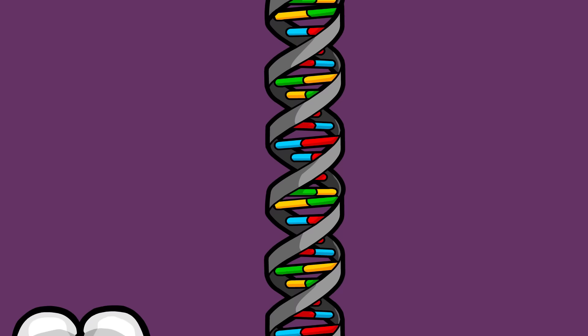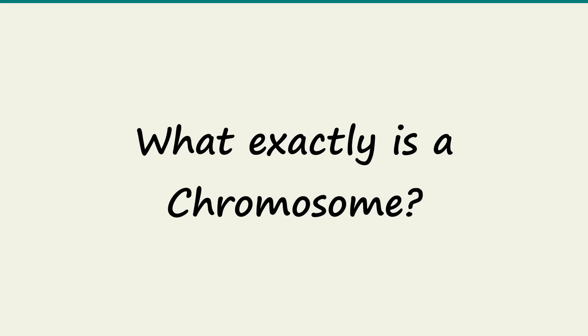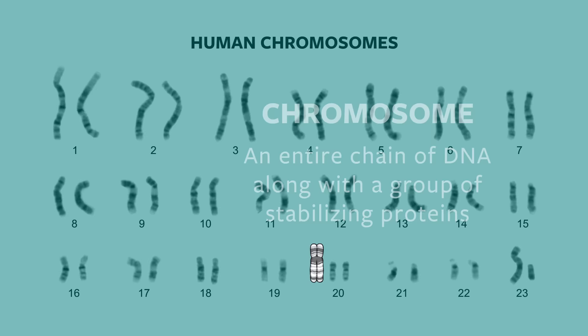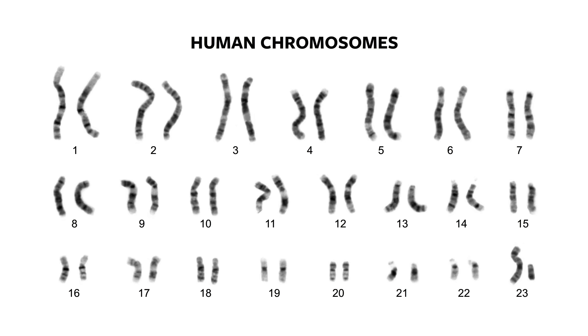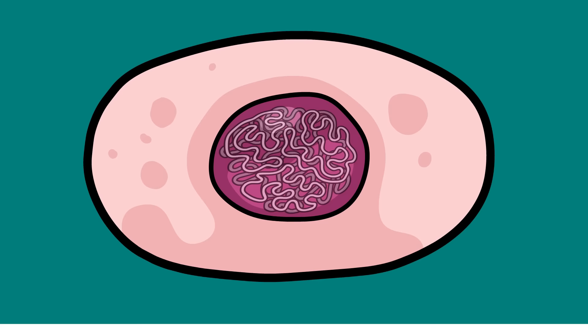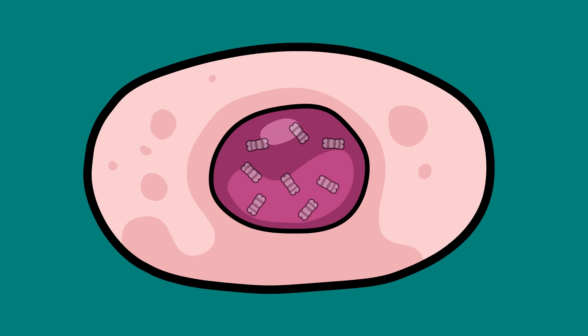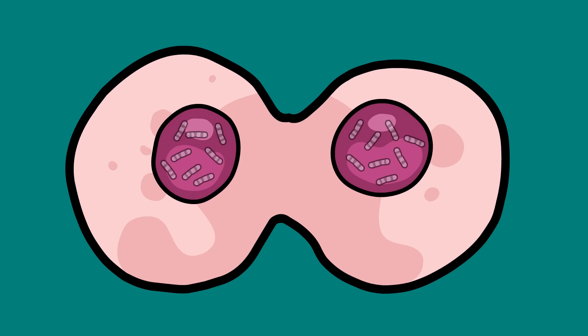So, to sum things up: what exactly is a chromosome? A chromosome is an entire chain of DNA along with a group of stabilizing proteins. Humans typically have 23 pairs of chromosomes in each of their cells — that's 46 altogether. One member of each pair came from your father, the other from your mother. For most of a cell's life, chromosomes exist in a loose, noodle-like structure. Chromosomes are copied and then condensed like spools of yarn for durability when a cell prepares to reproduce by splitting in two.